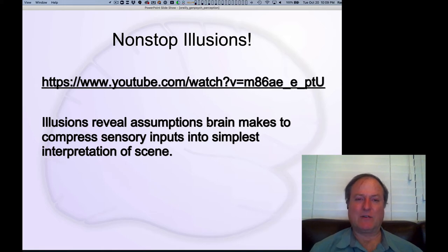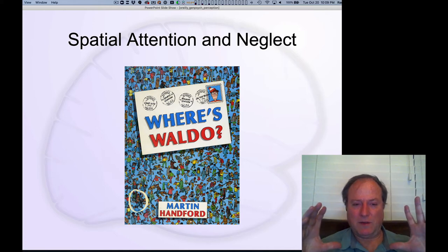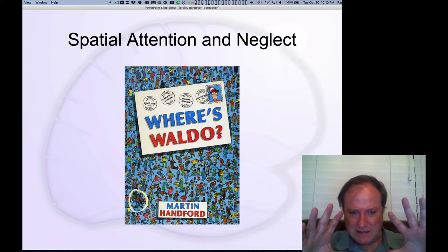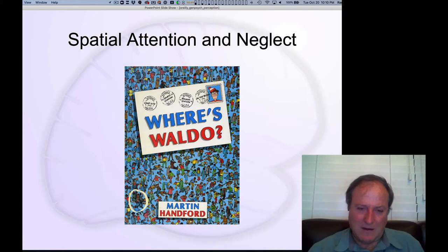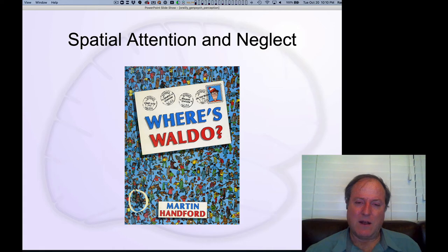Next we're going to talk about spatial attention and how that interacts with our ability to recognize objects. Spatial attention refers to the ability you know from Where's Waldo puzzles — or any game where you try to find things in crowded scenes. You can't process the whole scene at the same time; you have to focus that attentional spotlight on different parts of the scene, and then eventually you might find little Waldo. This reveals a lot about the nature of our visual system.